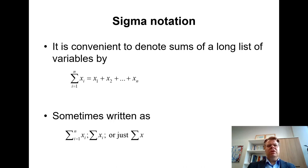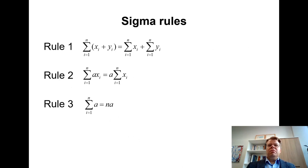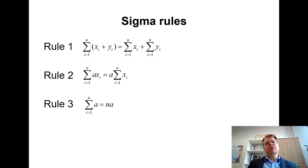Sometimes the subscript is not explicitly stated when it's obvious from context how many observations there are. There are some basic rules that we will also utilize. I do not have a lot of mathematical proofs in the course, but some I will have, and there I will apply these three basic rules for the sigma operator.